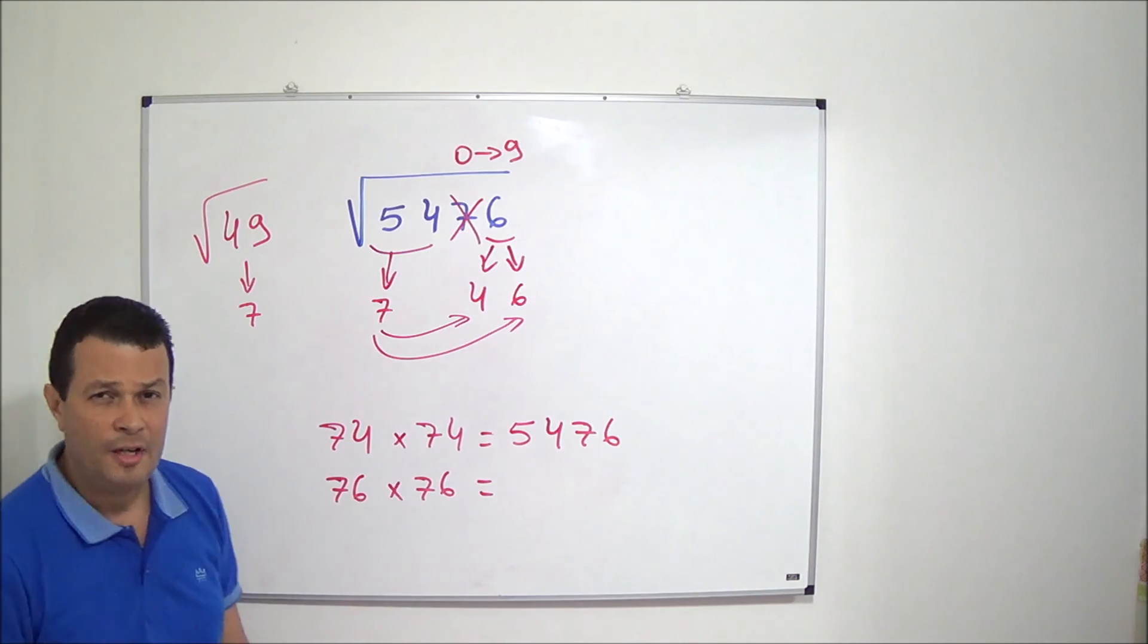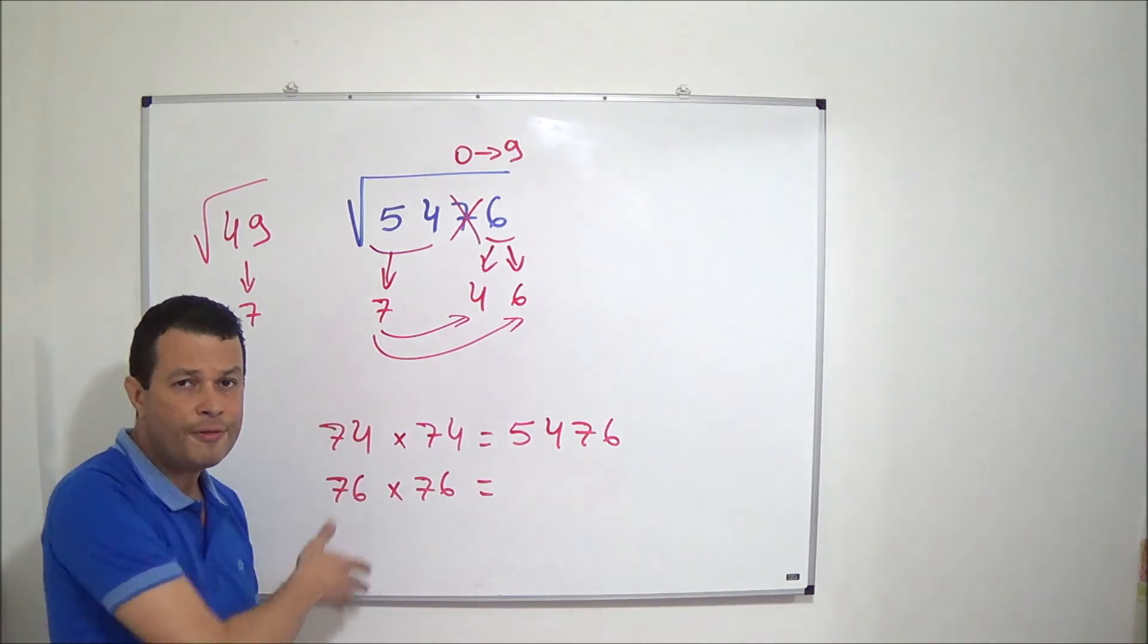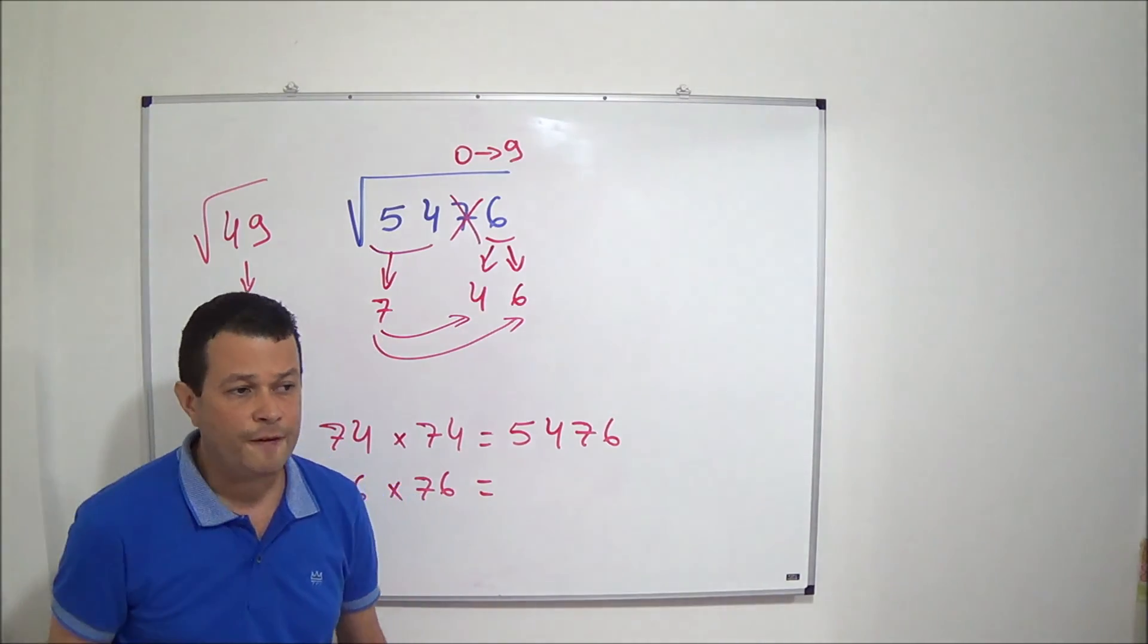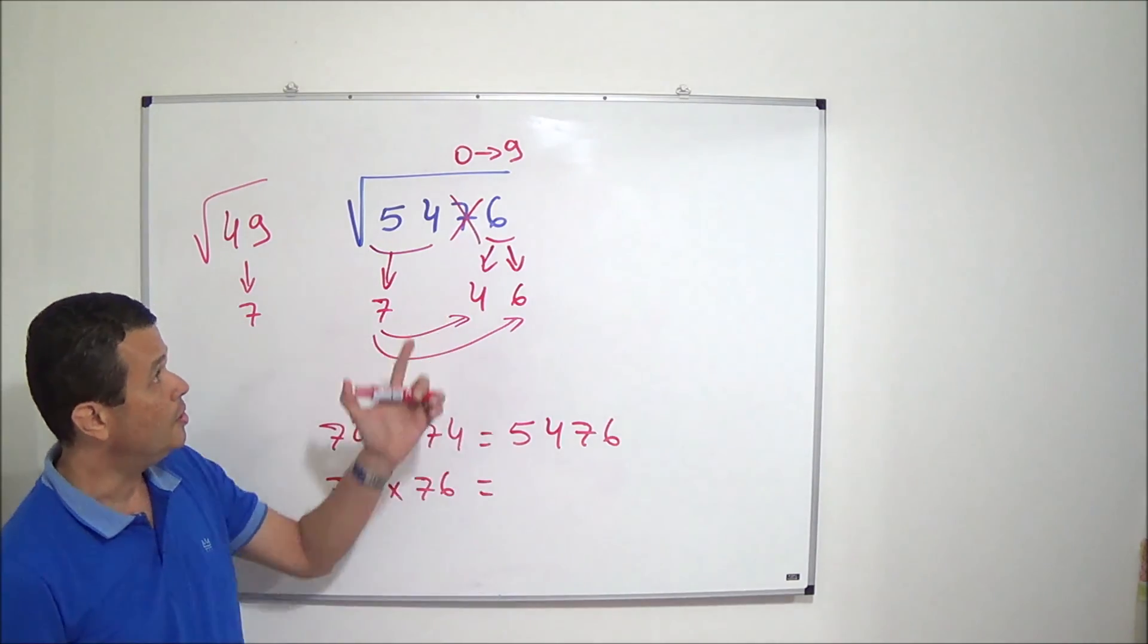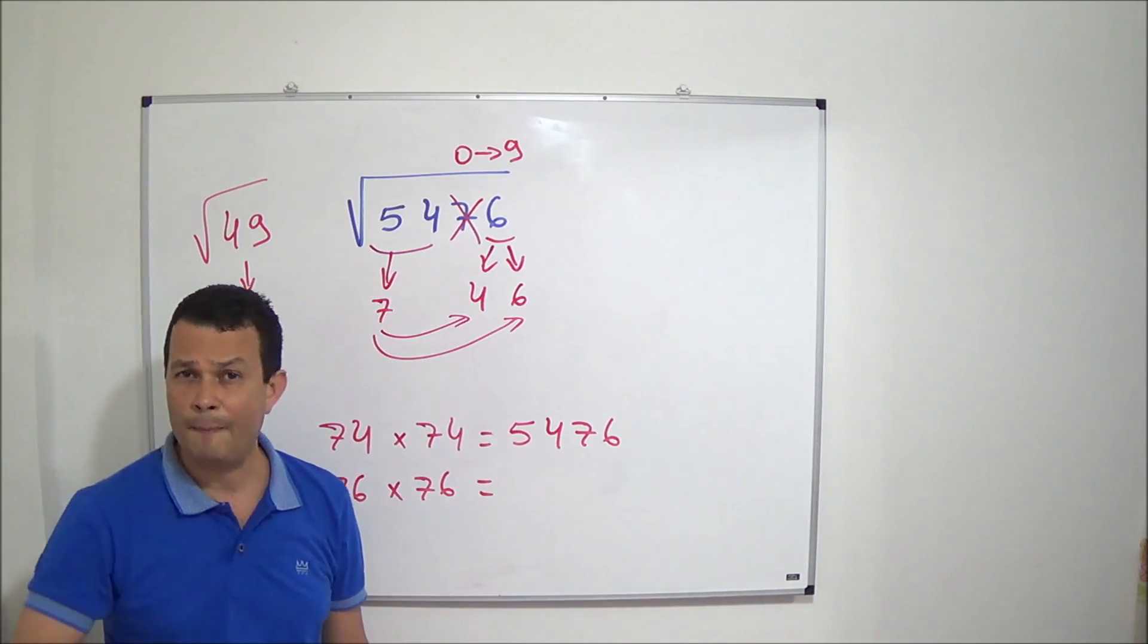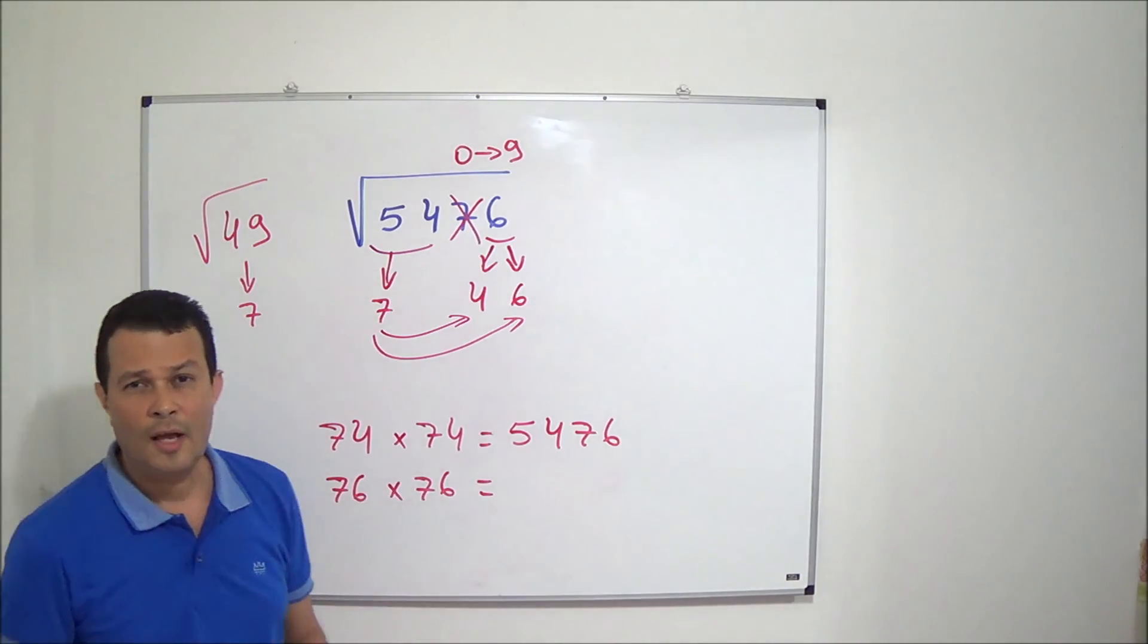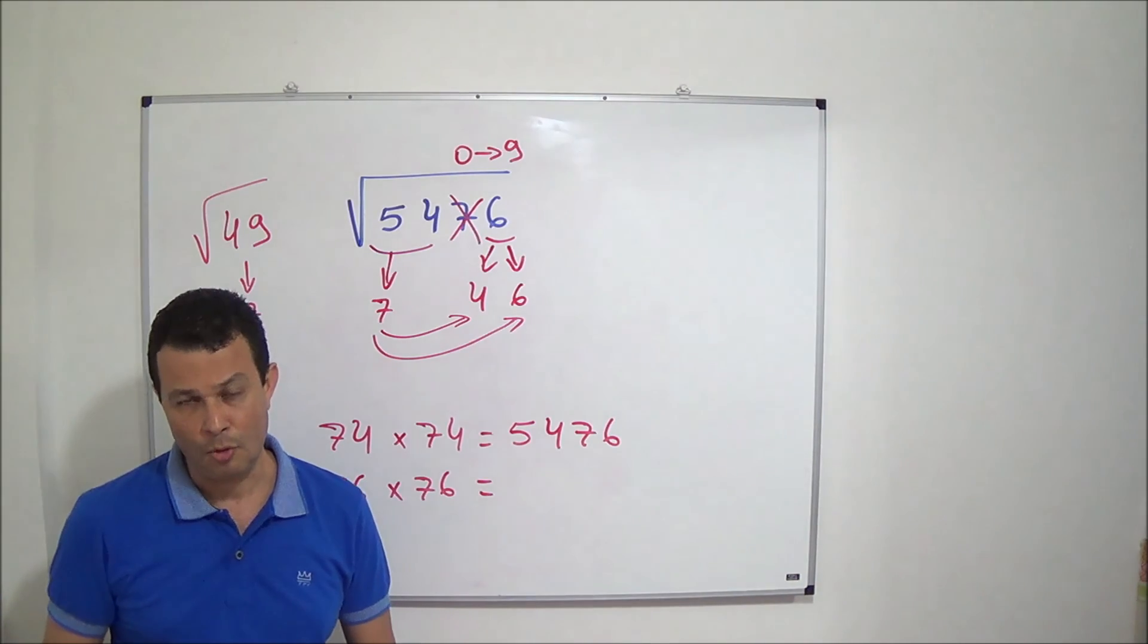But pay attention. If you did both tests and identified the right answer, it means that the number is not a perfect square. Consequently, the number has not exact square root.